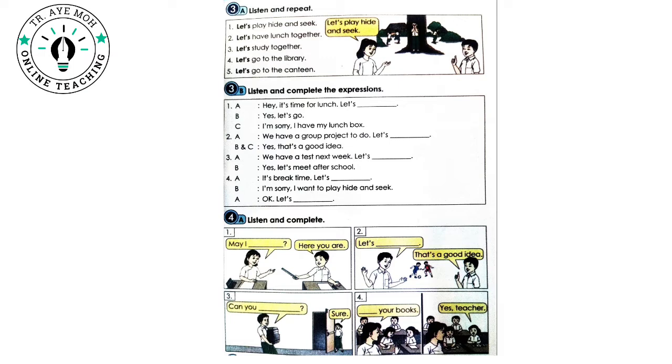Track 7. 3B. Listen and complete the expressions. 1. Hey, it's time for lunch. Let's go to the canteen. Yes, let's go. I'm sorry. I have my lunchbox.